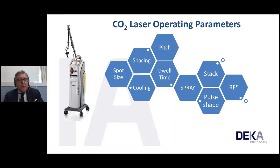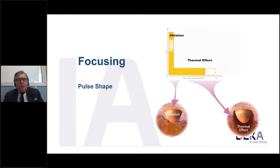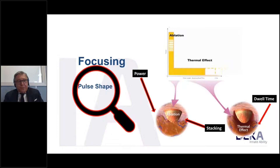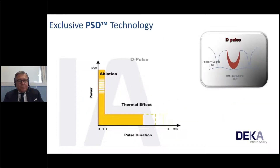Focusing on pulse shape: the first two parameters, power and stacking, are strictly related to ablation capability. The third, dual time, relates to thermal diffusion. A fourth parameter, pulse shape — particularly DP pulse used in 90% of fractional treatments — allows deeper penetration and stimulation and micro-ablation at deeper layers. The great capability of the D pulse mode to go into depth and create a very deep ablation crater is clearly demonstrated.